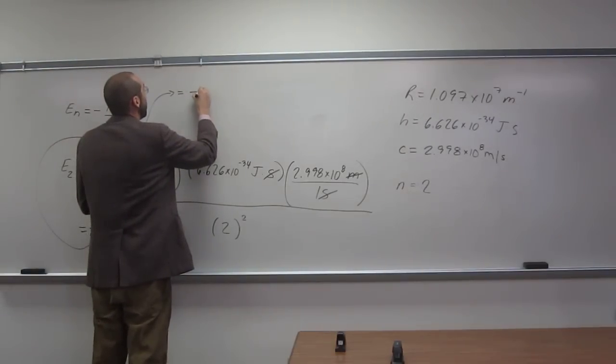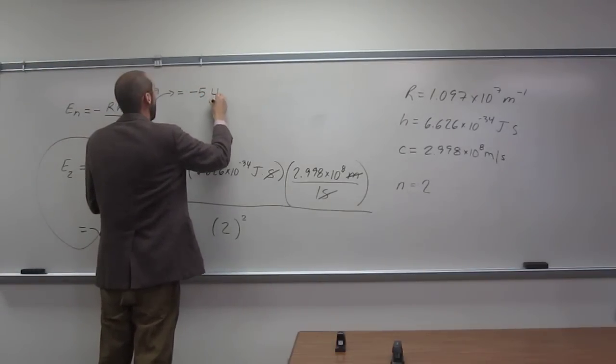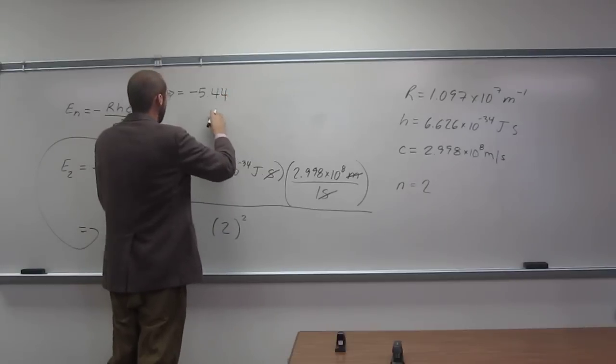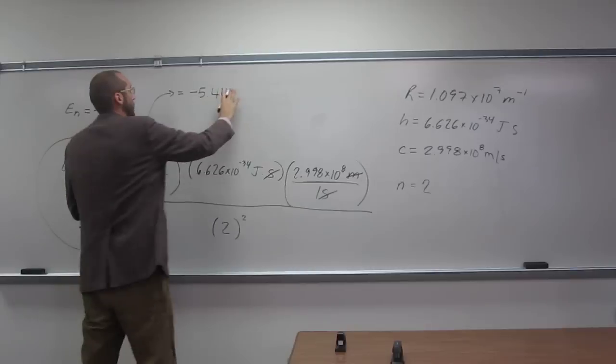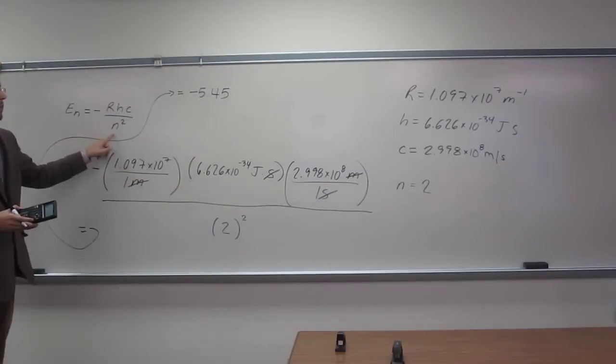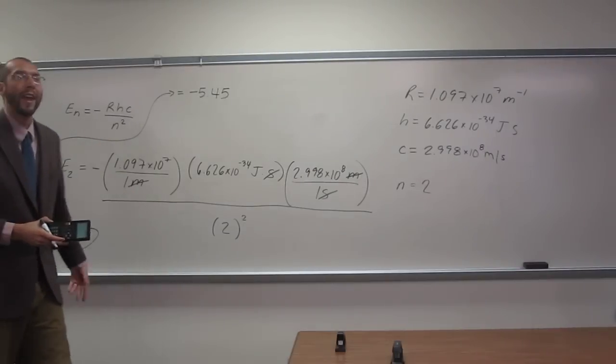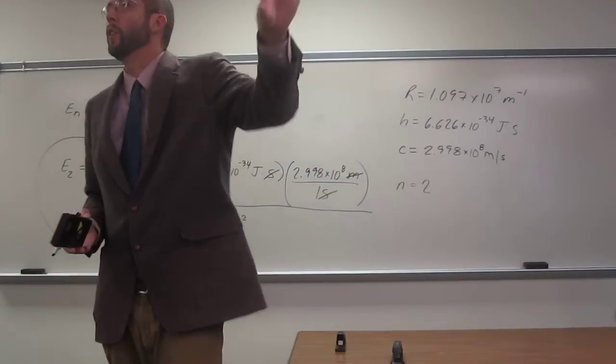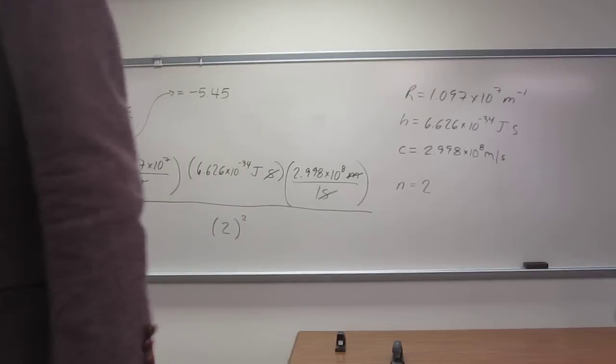So negative 5.44, we'll say 5.45, we'll set it to three significant figures, because with these ones, the only significant figures were the n. n is an integer, so that would be to an infinite number of significant figures.